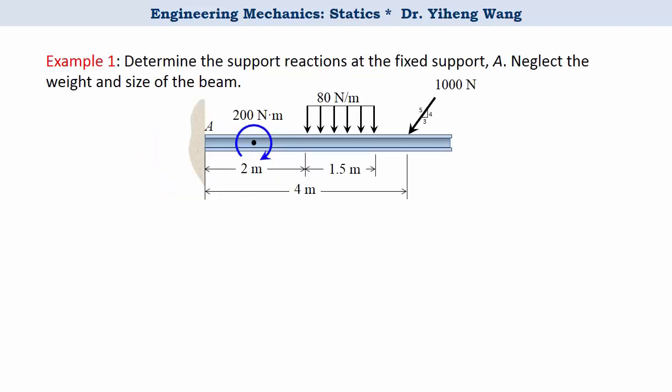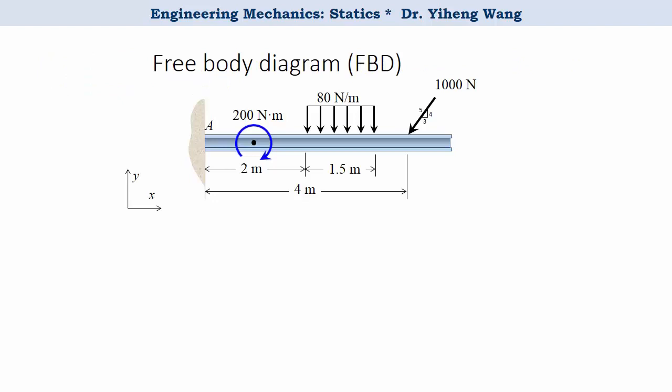Let's look at this very typical rigid body equilibrium problem. The applied loadings acting on this beam are known, and we need to determine the support reactions at the fixed support A. Just like solving particle equilibrium problems, we start by sketching the free body diagram of the body. We first isolate our object, so the wall needs to disappear, and then we note all external forces and moments on the diagram. The problem is we don't know what kind of support reactions we have at the wall, so we will analyze the structure to fill that information in.